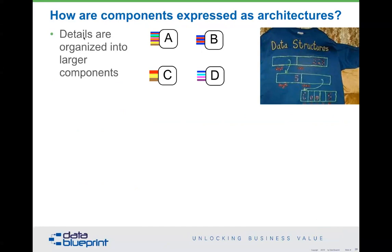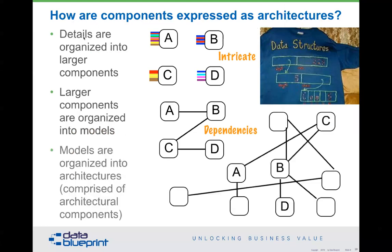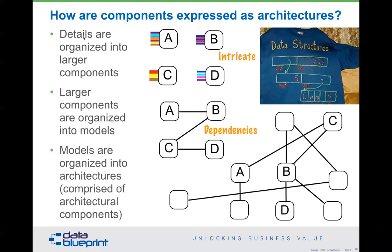If we're trying to express components as an architecture, details are organized into larger components. We don't think about a door as a doorknob and a hinge and a piece of wood — we talk about it as a door. Those larger components can be organized into larger models. The door can be part of a room, part of a house, part of something else. Now you're introducing a concept called dependencies — you can't put a roof on a house if the house doesn't have any walls.